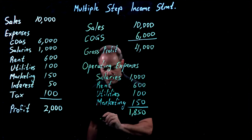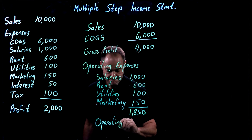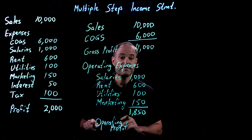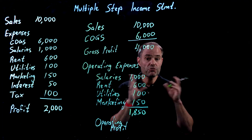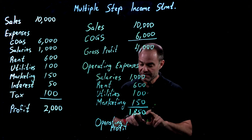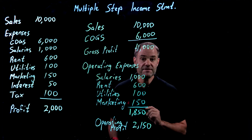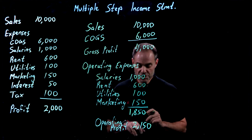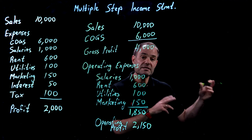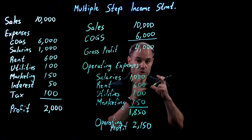What we're left with is something called operating profit. We have to be careful not to just say 'profit' — we had gross profit, now we have operating profit, so we need to be explicit about which one we mean. Operating profit is gross profit minus the operating expenses, which in this case is $2,150. This company generated $2,150 from its day-to-day operations, and we can compare that to other similar companies in terms of how much profit they make from operating their core business.